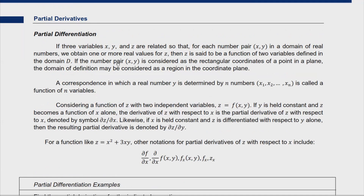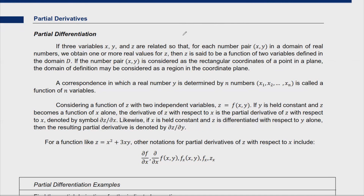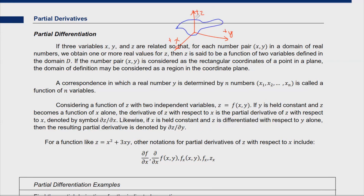The first topic is partial derivatives, or partial differentiation. When we talk about partial derivatives, you can imagine a 3D plane. We're no longer restricted to the Cartesian coordinate plane with x and y axes. We also need to understand how partial derivatives work in a 3D Euclidean plane, where we have x, y, and z axes, and we can draw a 3D graph or curve.